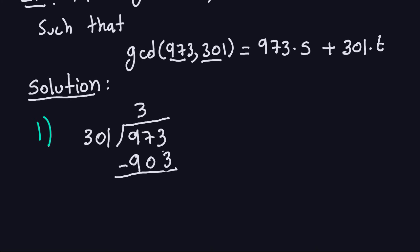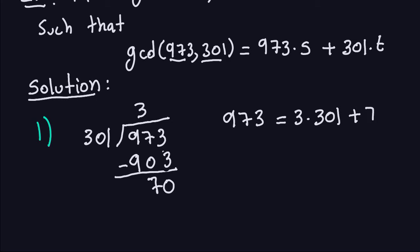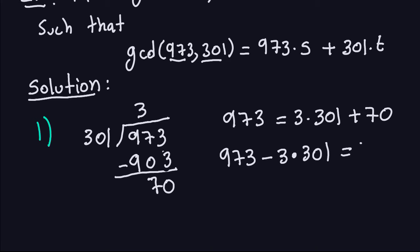Now, because I'm doing the extended Euclidean algorithm — actually finding S and T — I have to write this down in terms of an equation. So I write: 973 is equal to 3 times 301 plus 70. And I need to solve for the remainder, so isolating it gives me: 973 minus 3 times 301 is equal to 70. I'm going to mark that down as an equation I'll use later.